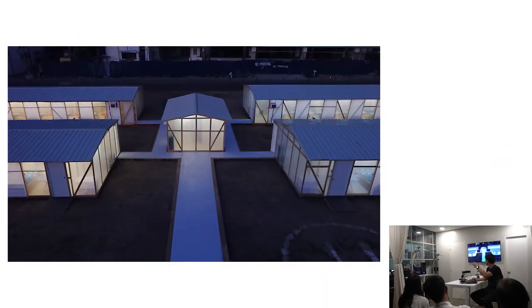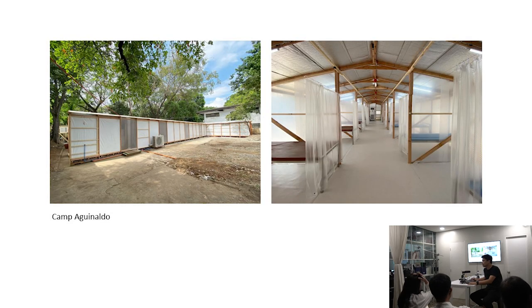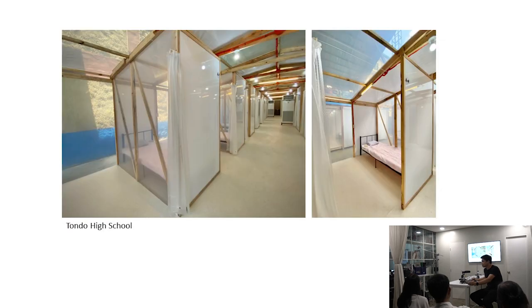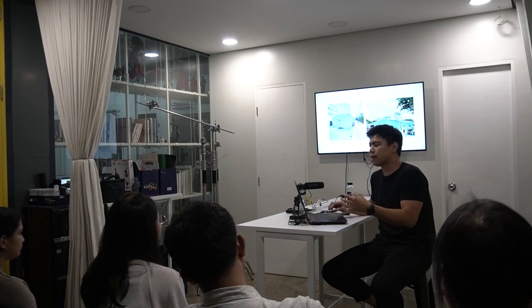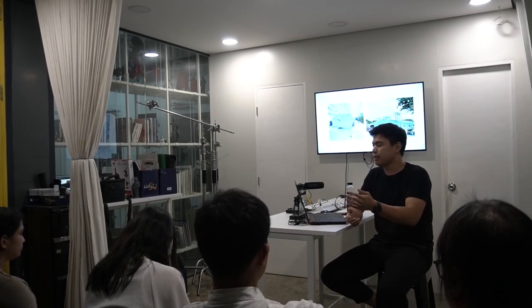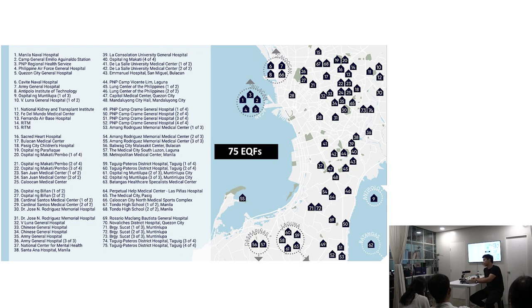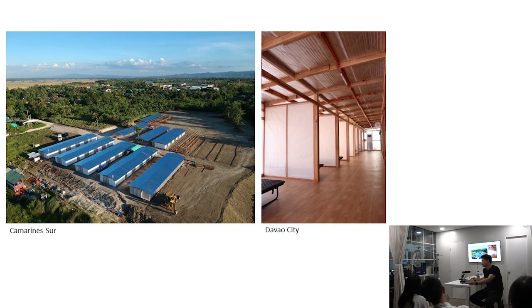The central control area looked like a Japanese space but served as the command center for four EQFs. Facilities were built in Makati, Aguinaldo, NCRPO Naval, Pasig, Army Hospital, Tondo High School, RITM, Santa Ana, and Viluna. Different materials were used depending on hospital requests — GI sheet, plastic — based on the hospital's future plans for the facility after COVID.